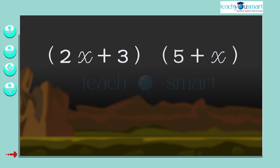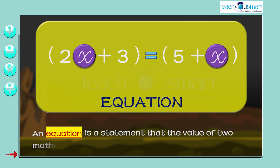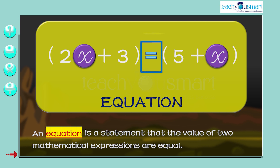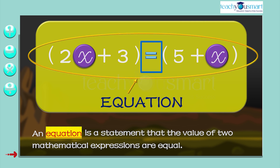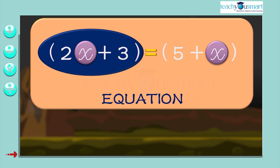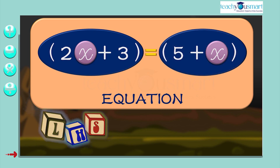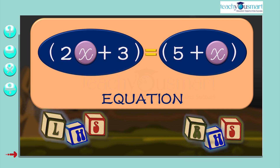2x plus 3 and 5 plus x are two linear expressions in one variable. When we connect these two expressions by an equal sign, it forms an equation. An equation is a statement that the value of two mathematical expressions are equal, and the expressions are connected through an equal sign. So 2x plus 3 equals 5 plus x is an equation. The expression to the left of the equal sign is called the left-hand side, denoted by LHS, and the expression to the right is called the right-hand side, denoted by RHS. In an equation, the values of LHS and RHS are equal.